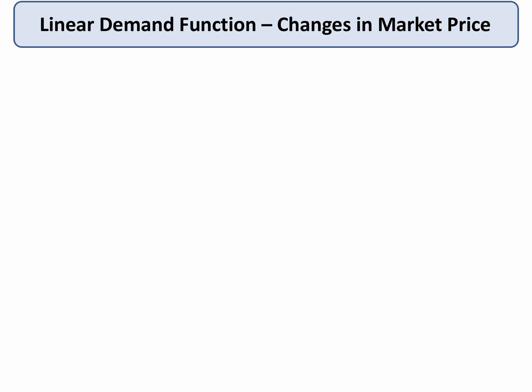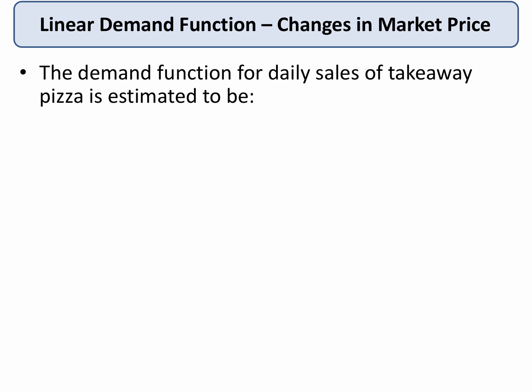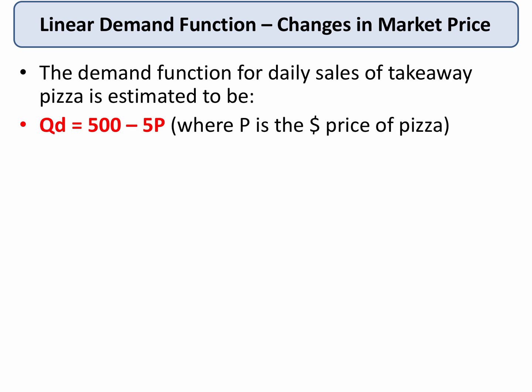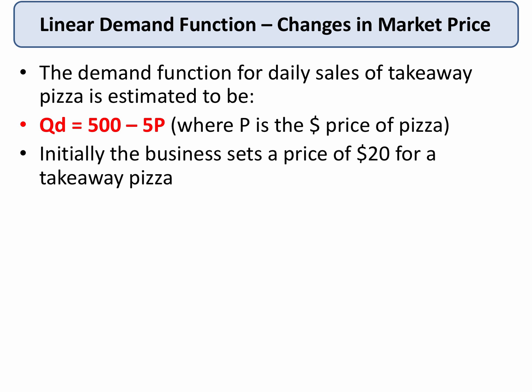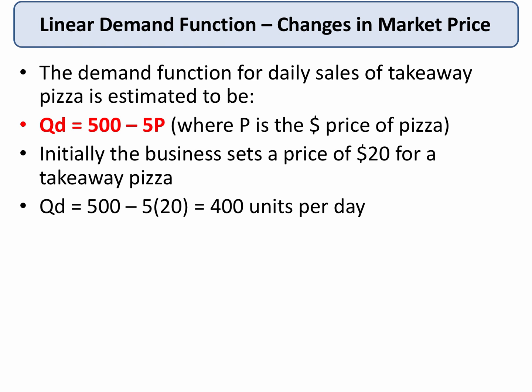Now let's look at what happens when prices change with a good example. The demand for takeaway pizzas is assumed to be 500 minus 5P, where P is the price of pizza in dollars. Initially the business sets a price of $20 for a pizza, meaning demand will be 400 units per day.